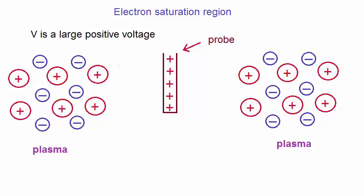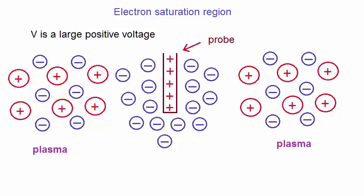As a result, electrons are attracted to the probe, and they form a negative space charge region around the probe, which is a negative sheath.